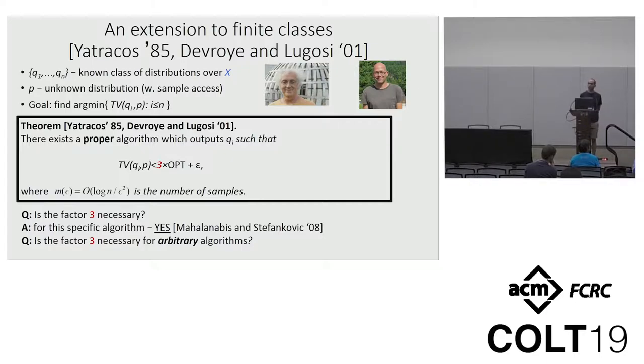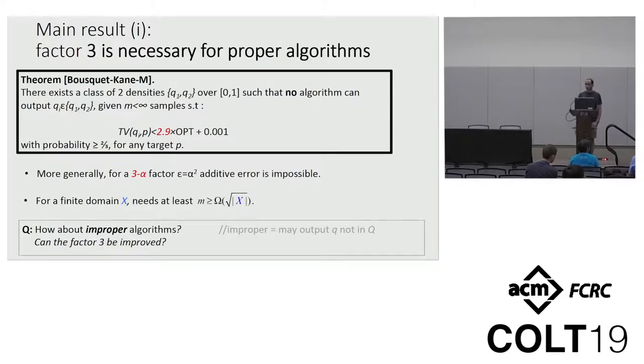So this is the case for two distributions. Now for more than two distributions, in the book by Devroye and Lugosi, you can find the following theorem that given any finite family of distributions, one can find one of them which is at most three opt plus little o of one. So we can properly learn any finite class of distributions up to this three factor. And again, the question is whether this factor of three is necessary, and that was the starting point of our work.